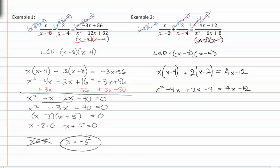Before I set this equal to zero, I'm going to add like terms. This gives me x squared minus two x minus four equals four x minus twelve.